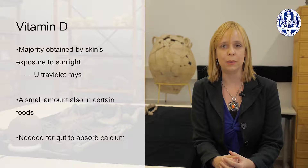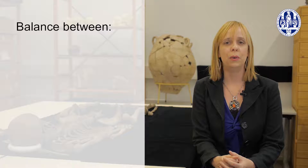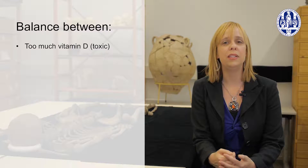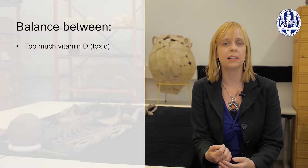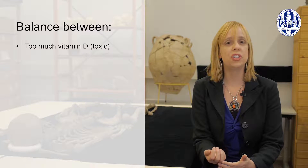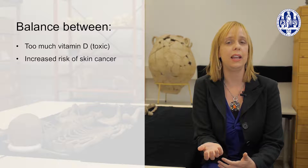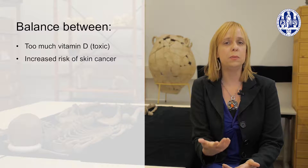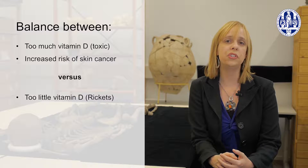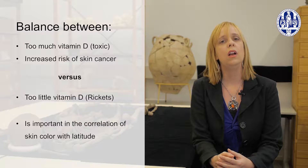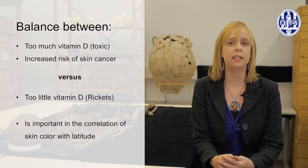With ultraviolet rays, your skin cells produce vitamin D, allowing your gut to absorb calcium. A certain amount of vitamin D is essential, but too much vitamin D can be harmful and toxic. Too much sun can also be harmful by causing much higher rates of skin cancer. It's this balance between too little sun and too much sun that's an important factor in the correlation of our skin color and the latitude in which our ancestors lived.